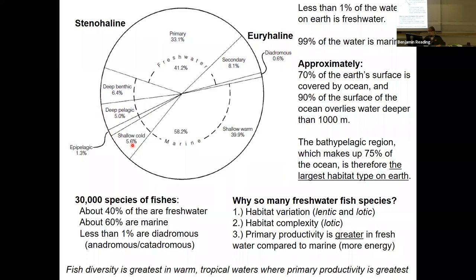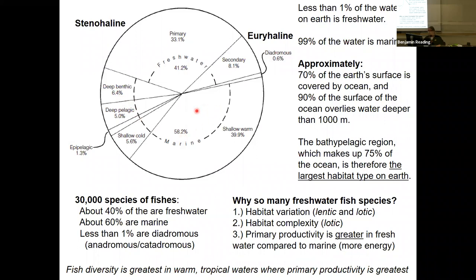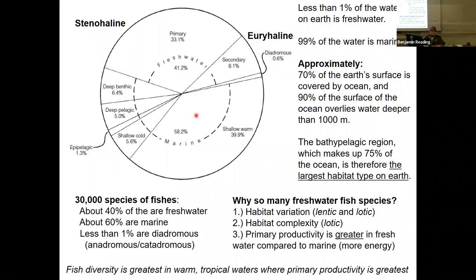Despite being the largest habitat, only a fraction of fishes actually occupy the bathypelagic region. Part of the reason has to do with energy. The closer you are to the surface, the more photosynthesis, sunlight, and warmth there is. The deeper you go, the colder it is and there's no light or photosynthesis, making it a tough neighborhood to survive.